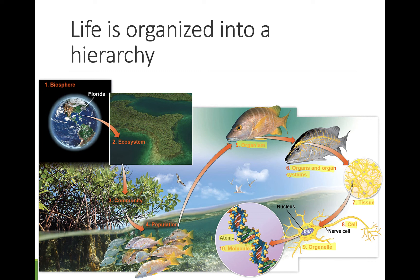A group of like organisms that live in the same place is called a population. Members of a population can mate with each other. Groups of different populations make up a community — a community is all of the living populations in an area. This community has mangroves, seabirds, fish, and other life in the water.